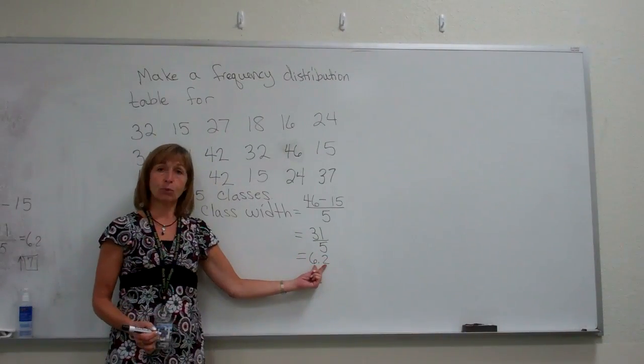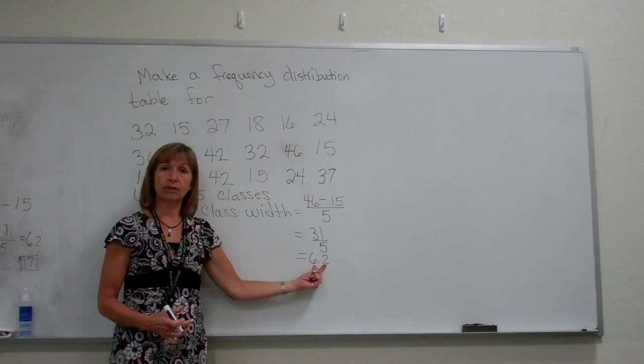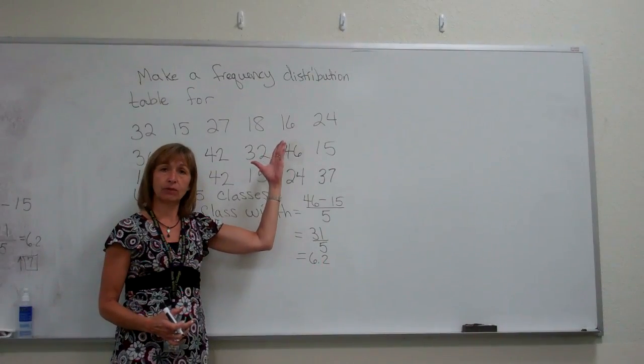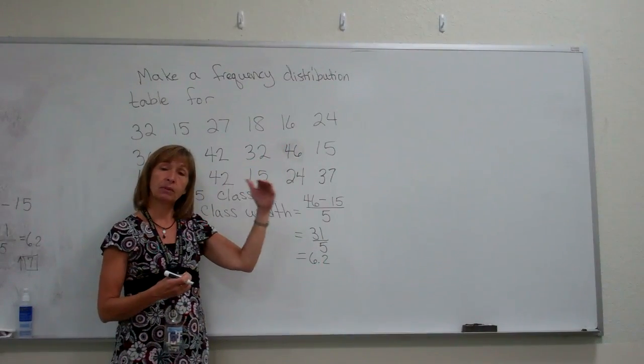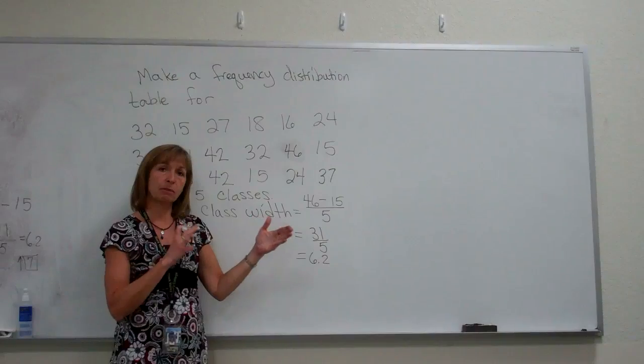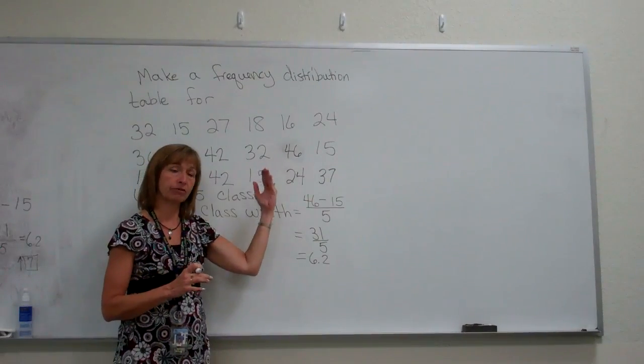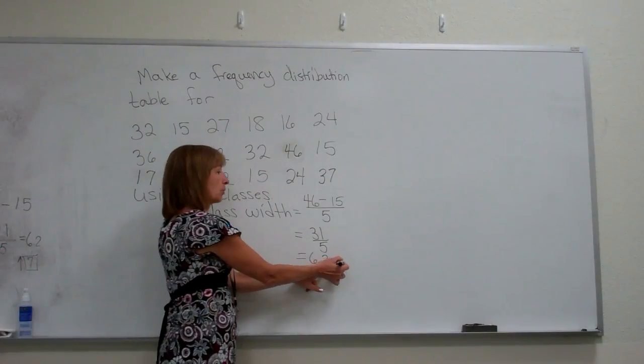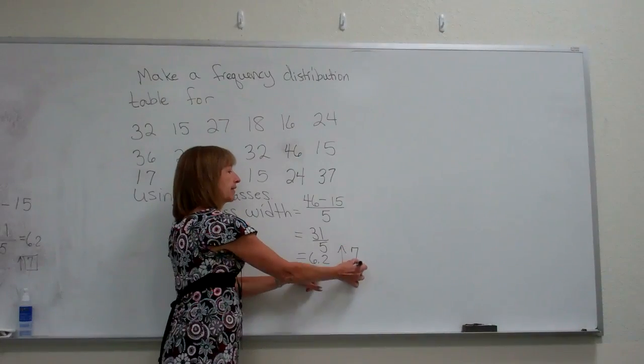But when we're doing the class width, we need it to be the same accuracy as the data values but to always round up so that we make sure we have enough span of numbers that all of our data would fit. So rounding 6.2 up, we'll get a class width of 7.